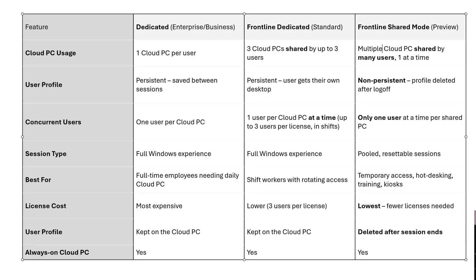I'm thinking about how I can explain the differences between the different SKUs, so I'm going to flick over to my other screen. What I'm basically going to do today is walk through how to set it up and connect to it. But first, we're going to go through what is the difference between Windows 365 Frontline Shared Mode, the Dedicated Mode, and Frontline Mode. I think this explains it quite well, hopefully.